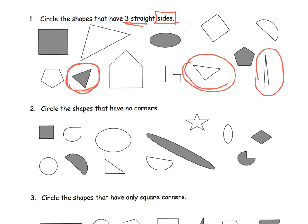Some curious ones might be, what about this guy? Does that have three straight sides? That's a nice conversation piece to have with your students. Then down here, circle the shapes that have no corners. So really, what's the point of this lesson, or this problem here? It's really to practice the word corners.